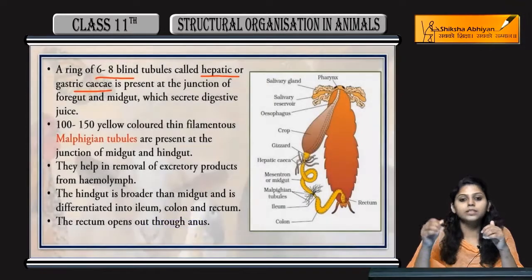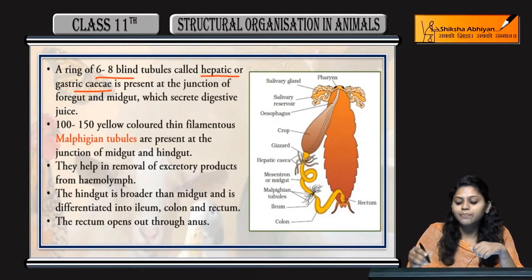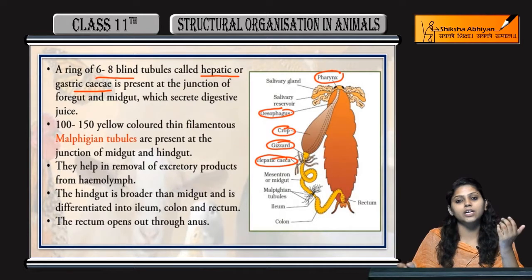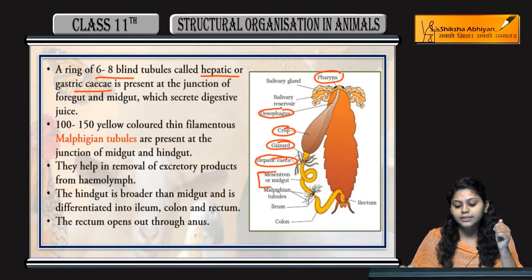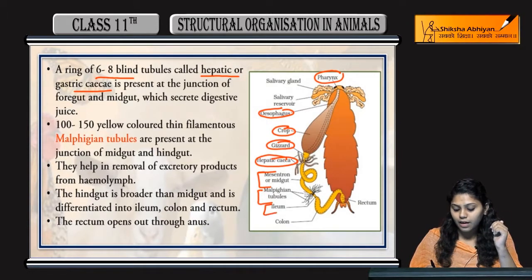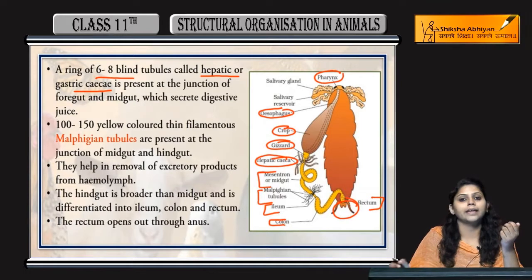This was all about the alimentary canal of cockroaches: pharynx, mouth, esophagus, crop, gizzard; then hepatic caeca where digestive juices are secreted; mesenteron or midgut; then Malpighian tubules where excretion occurs; and the hindgut consisting of ileum, colon, and rectum, with the rectum finally opening through the anus.